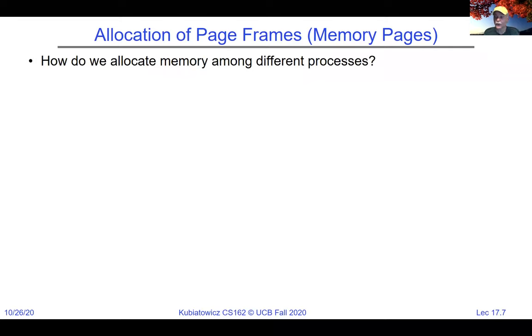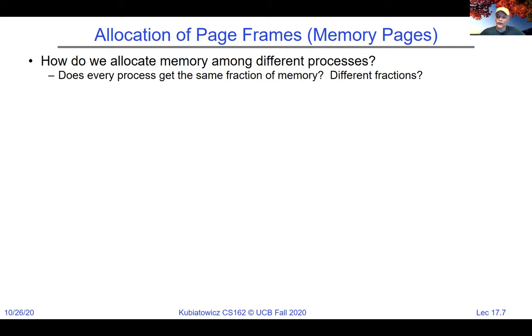How do we decide which page frames are allocated amongst different processes? We have a physical amount of memory — say 16 gigabytes or terabytes for a cloud server — and the question is how to divide that physical memory up among the different processes. Is it for fairness? We have many policies; this is a scheduling decision. Does every process get the same fraction of memory? If I have 100 processes and 100 gigabytes, each gets a gigabyte. But different processes have different memory needs — giving a process 100 gigabytes when it reuses the same page over and over again is wasteful.